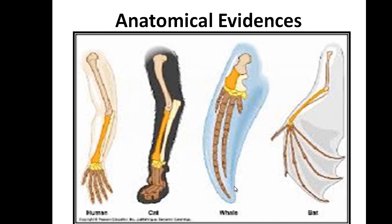The second evidence is anatomical evidence. On screen, you can see the arm of a human being, then a cat, whale, and a bat. Externally, all these organs of these organisms are very different. But if we look at their internal structures, we can see that all these organisms show similar characteristics in their anatomy. This indicates that all these organisms must have the same origin and must have common ancestors.